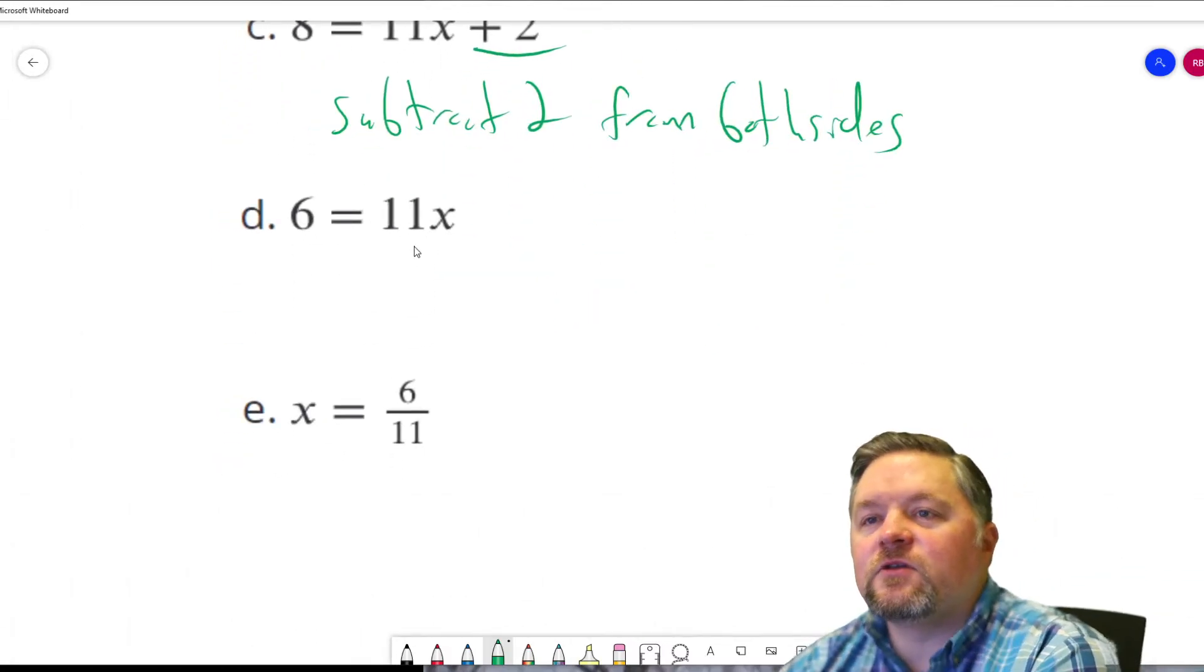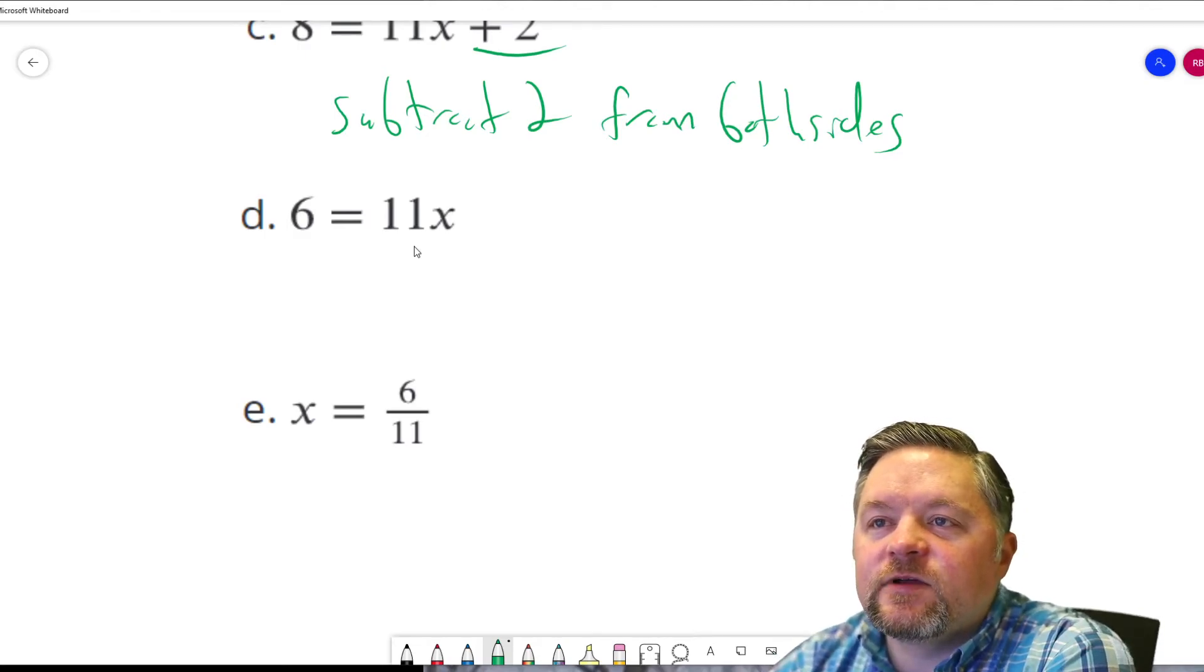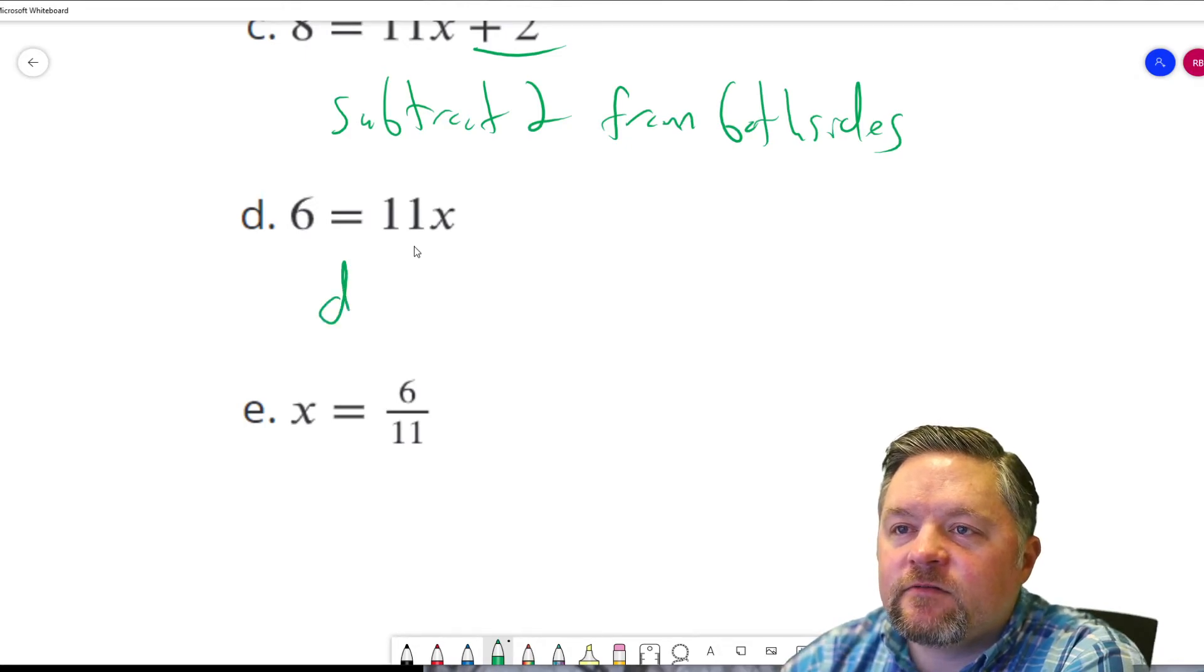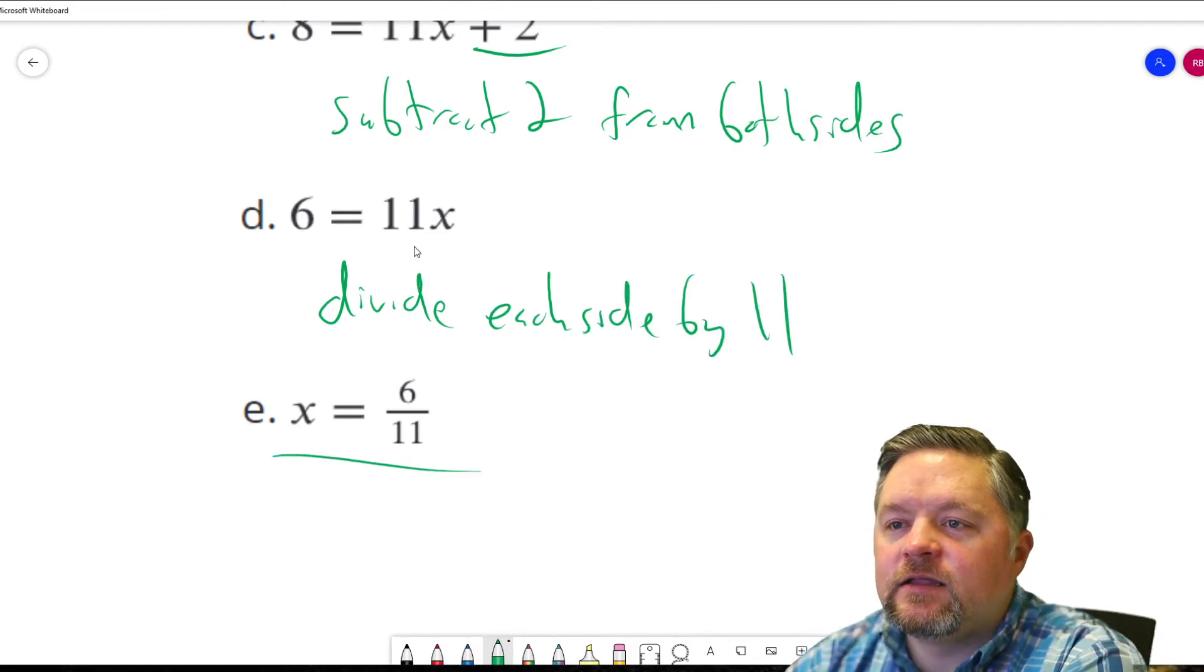Now, what did we do to isolate the x? We got to get rid of that 11. How do we get rid of multiplying by 11? We divide each side by 11. And then we're done.